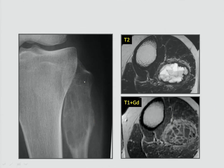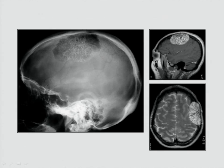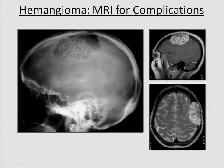Another type of tumor which is lytic and expansile — when you look at T2 and see fluid-fluid levels, you can say this is an aneurysmal bone cyst. There are a few exceptions such as telangiectatic osteosarcoma, but this is very rare. In hemangioma you see thickened trabeculae like the wheel of a bicycle. You can make the diagnosis on X-ray, but you need MRI to see complications.